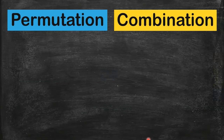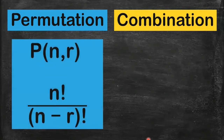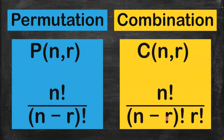What else do we know? In a permutation, we use this formula and notation. For a combination, we use this one. They're almost the same — halos magkamukha lang sila — so it's easy to memorize. In the combination formula, you just have R factorial in the denominator. That's the only difference.